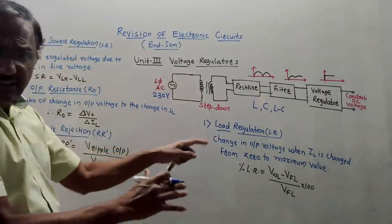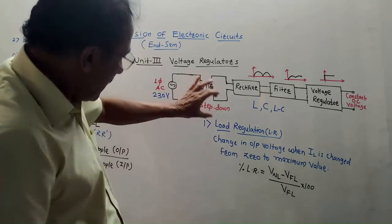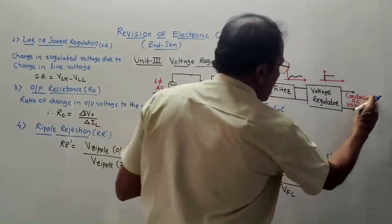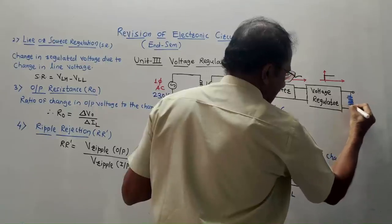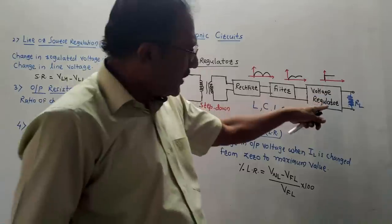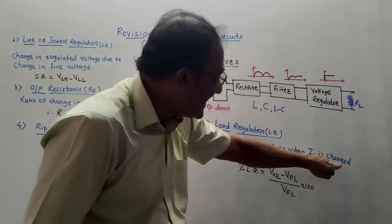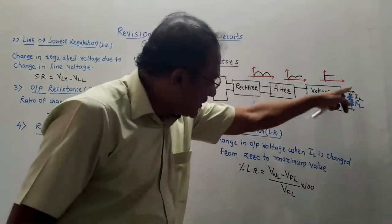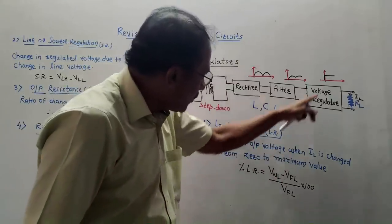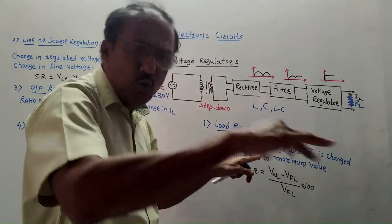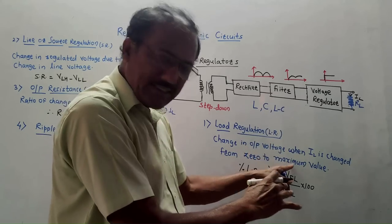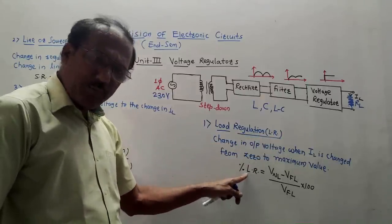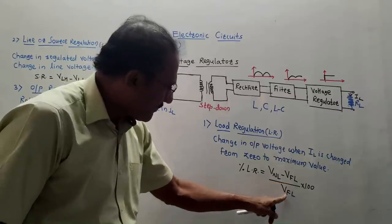There are four important parameters related to voltage regulation — the definitions are really important. First is load regulation. It is the change in output voltage when the load current IL is changed. At the output I connect a load resistance RL, and as IL changes from zero (no load) to maximum (full load), the output changes. This is known as load regulation, LR, given as a percentage: percent LR = (V_no-load − V_full-load) / V_full-load × 100.